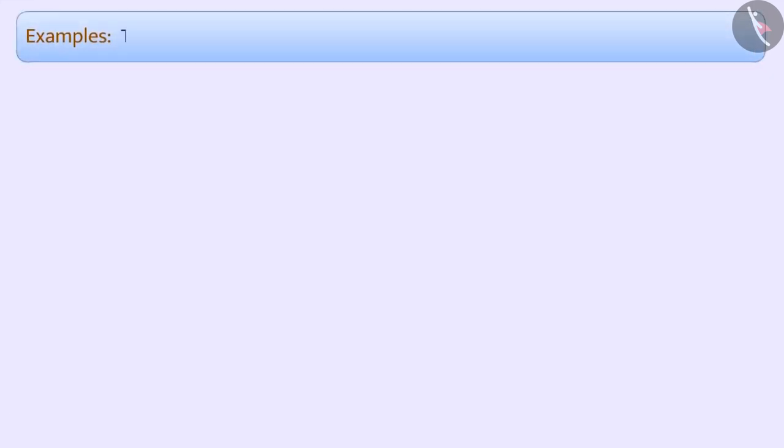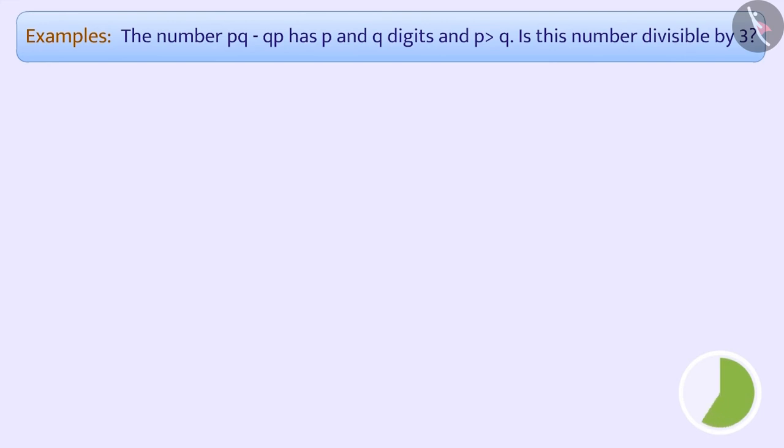Example 4. The number pq - qp has p and q digits, and p is greater than q. Is this number divisible by 3? Just think about how we can solve this. You are absolutely correct. We can solve this by using the general form.